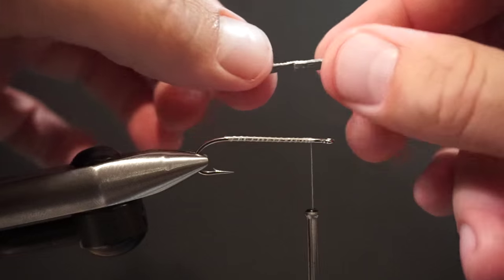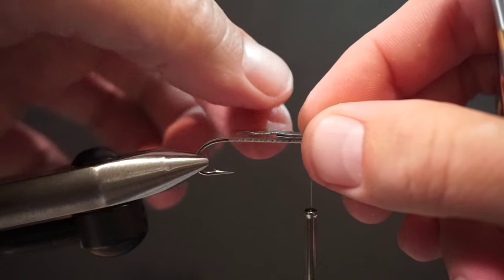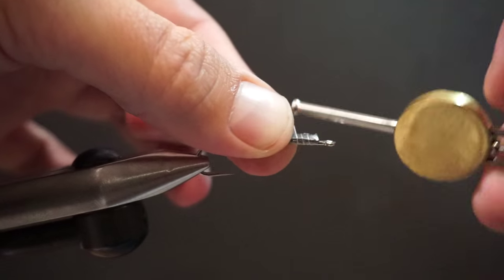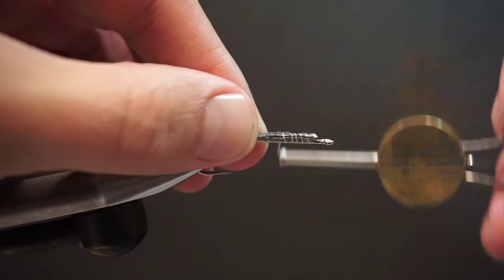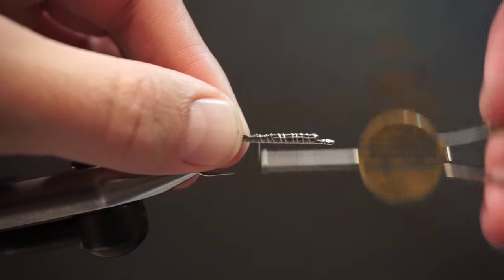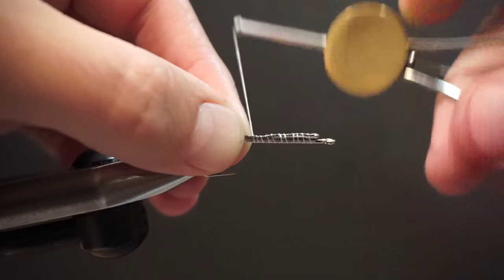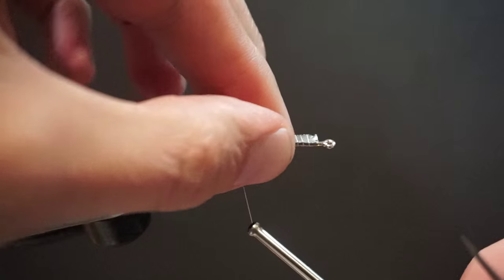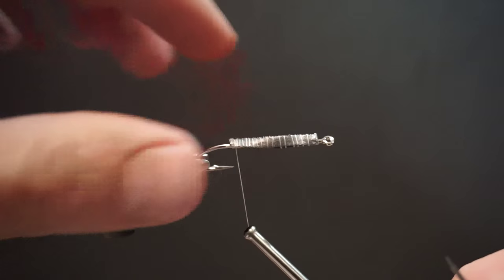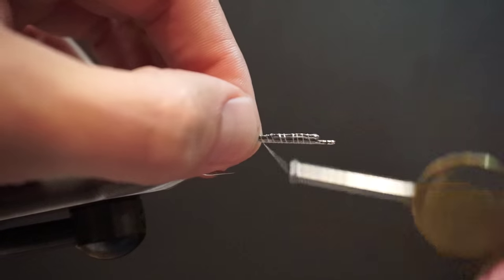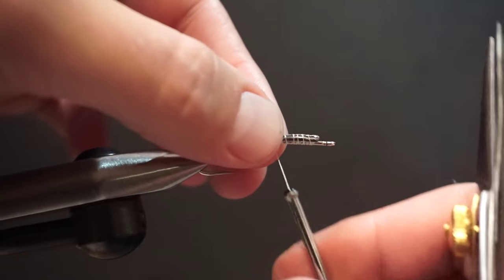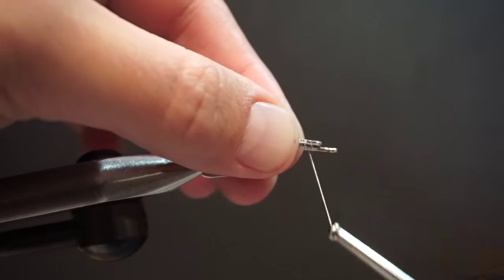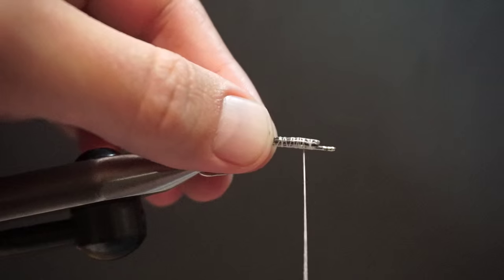So I've taken some matchstick lead here and just folded it over, the heaviest part towards the front of the hook. Want to make sure that's centered on the top there. When we spread the weight out like this, it allows us to not use those heavy eyes. Just want to cover that up good.